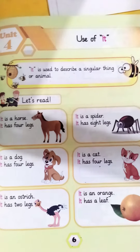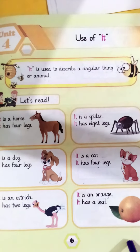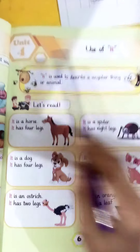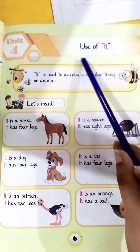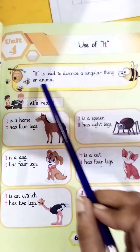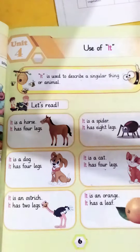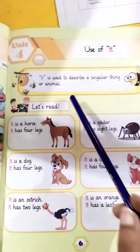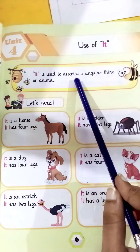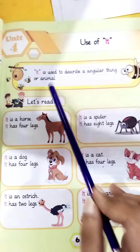Assalamu alaikum class. We did English reading book, page number 6, lesson number 4. The topic is the use of 'it'. It is used to describe a singular thing or animal.